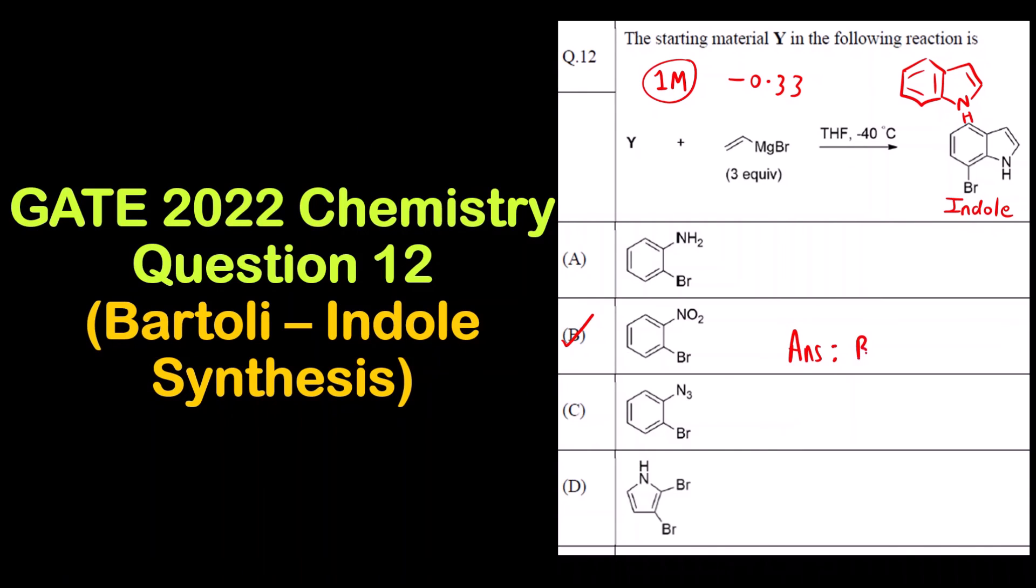So you can see the mechanism is quite lengthy. You do not have time to write down the entire mechanism and check for all the options whether we are getting the product or not. So either you know the synthesis, that is Bartoli indole synthesis. If you knew the mechanism and the reaction, then you can straightforward mark option B. I hope you have understood the mechanism of this. Thank you so much.